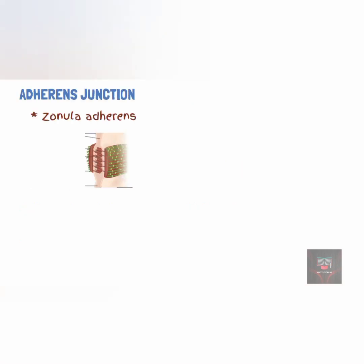Adherence junctions, also referred to as zonula adherens or belt desmosomes, are called belt desmosomes because they form a tight belt around the cell. Generally, whenever a cellular junction forms a belt around the cell, it is known as a zonular junction, such as zonula adherens and zonula occludens.